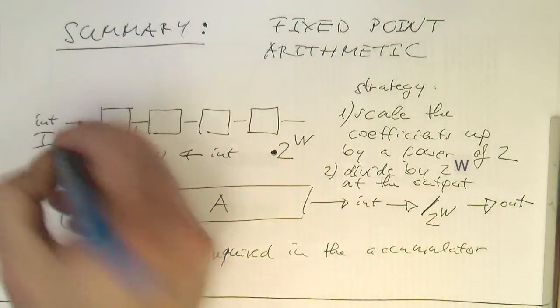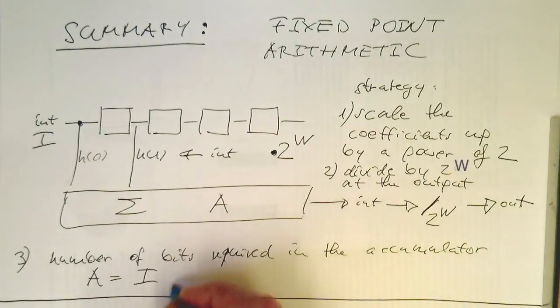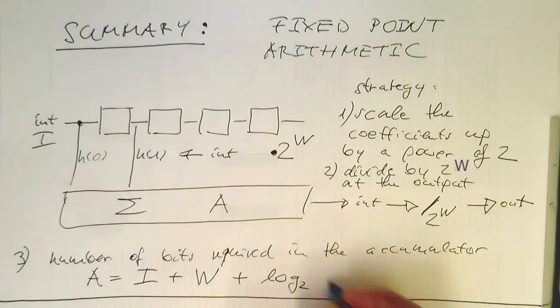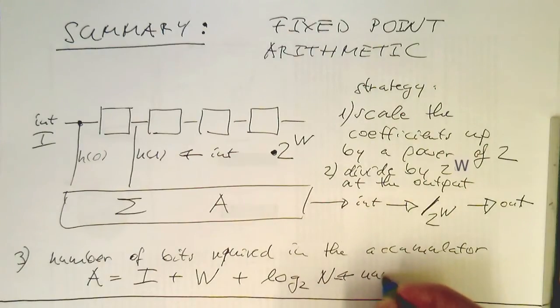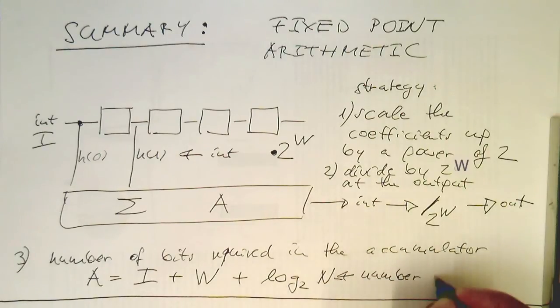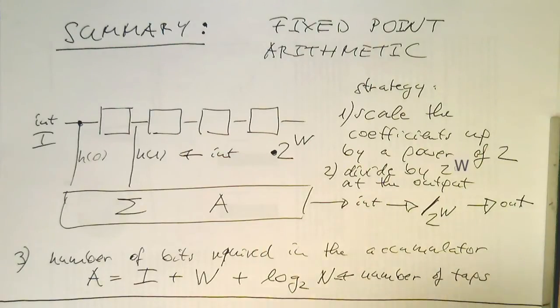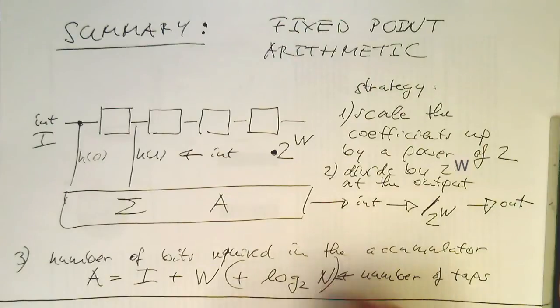i, the numbers of bits coming in, plus our w, and then plus log 2 n, and this was the number of taps. Whereas this one here can be omitted in case the overflows are temporary.